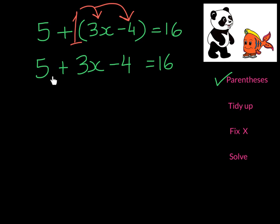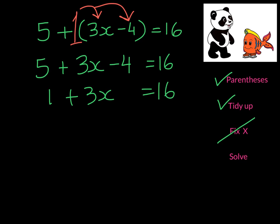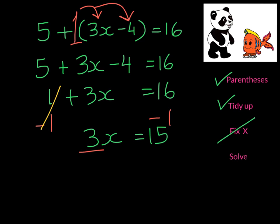At this point we need to tidy up because we have 5 and negative 4, so that becomes 1. The rest of the equation stays the way it was. So I've tidied up. I don't need to fix x because there's only one variable in this equation. So I proceed to solve — I subtract 1 from both sides. On the left-hand side I have 3x, on the right-hand side I have 15. Then we will divide by 3 and x will be 5.